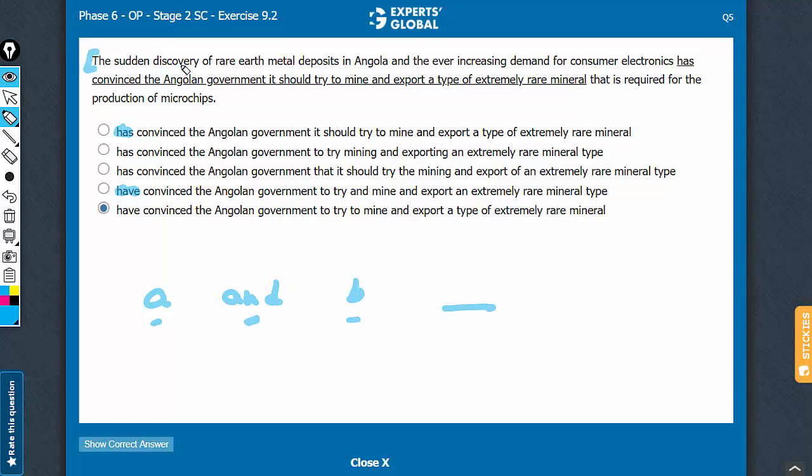Similarly, in this answer choice, you have A here, the discovery, and B here, the ever-increasing demand. Discovery is singular, demand is singular, but A and B together become plural, and therefore, have is the right usage.